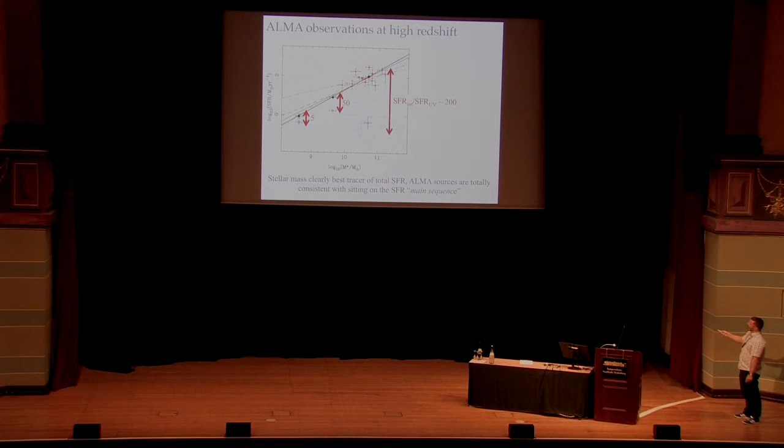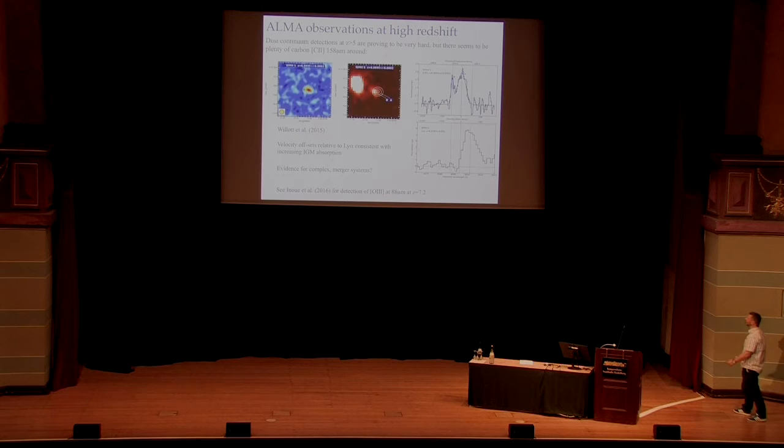But when you take that into account, then they sit exactly on the main sequence of star formation rate that other people have determined previously. The highest mass ones have the highest ratio of total to UV. When you go down to masses of about 10 to 10, the ratio is about 50. When we get down to the lower mass objects, it drops down to about 5 or actually a lower ratio than that. So at high redshifts, when we're dominated by galaxies which have masses of about 10 to the 9 solar masses, basically calculating the UV and boosting it by about a factor of 5 gets you what the total star formation rate is. And that's what most people do anyway. So actually, previous estimates of what the star formation rate density of the universe is at redshifts greater than about 6 are probably pretty accurate.